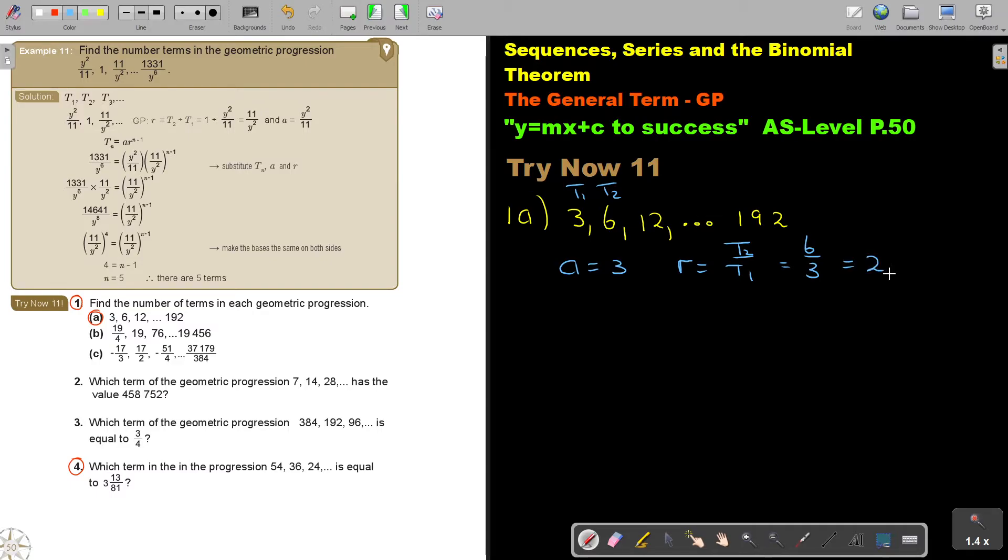I know it's a GP. So the value of R can be getting. This is term 1, term 2. So it's term 2 divided by term 1, which is 6 divided by 3, which will be 2. And then don't forget your general formula. TN for GP: A, R, N minus 1. So if I'm substituting it, I'm just going to start by saying that last term, 192.